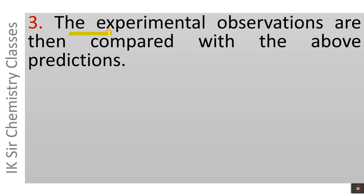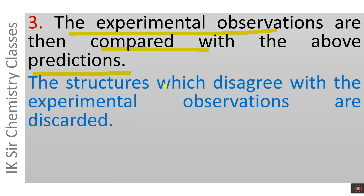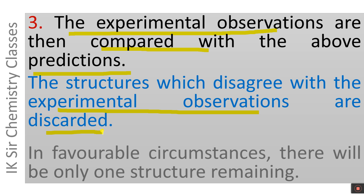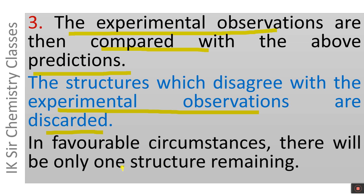The experimental observations are then compared with the above predictions. The IR spectrum, scanned experimentally, is compared with the above predictions. The structures which disagree with the experimental observations are discarded. In favorable circumstances, there will be only one structure remaining, and that is the predicted structure of that metal carbonyl.